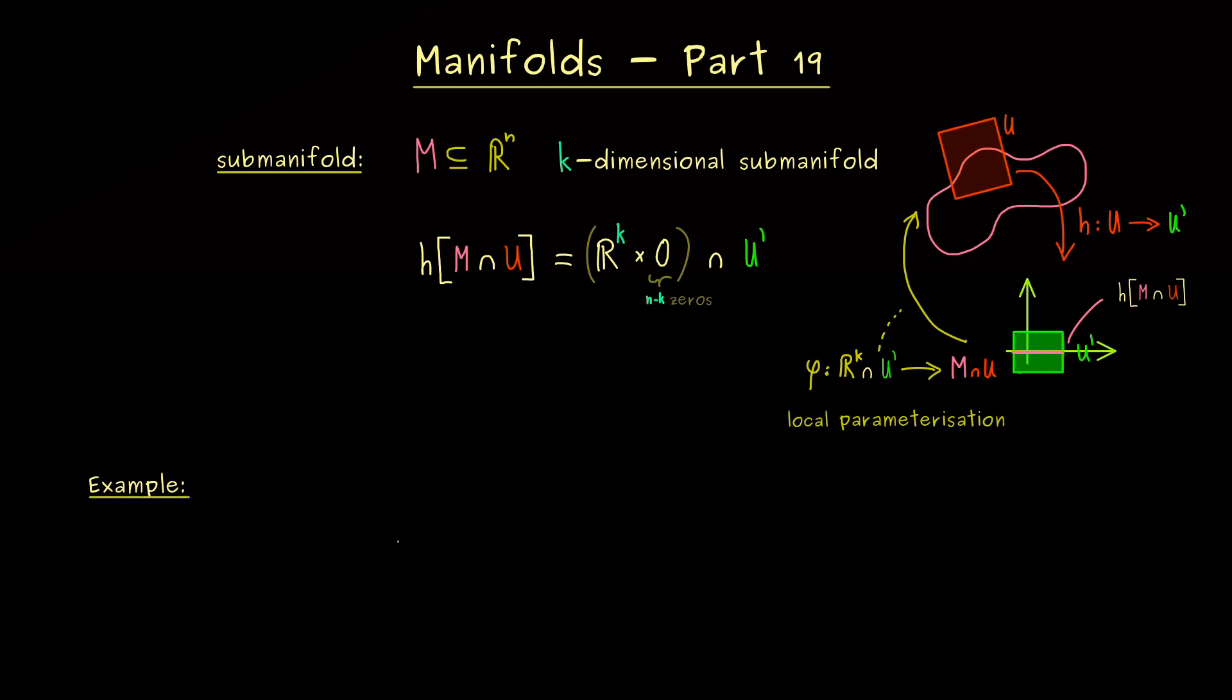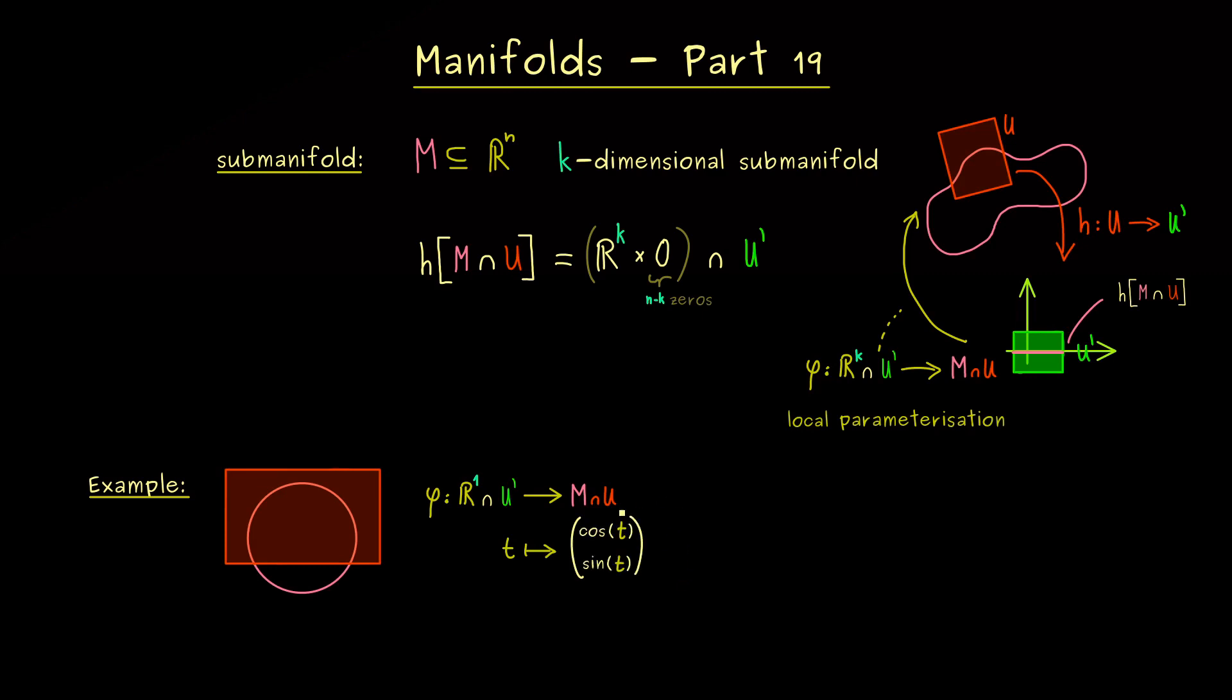And one that comes to mind would be S^1, the circle in R^2. And then I would say, let's write down a simple parameterization. So the map phi has some domain, but it's one-dimensional, so we only need one variable t. And of course, this variable t is sent to a two-dimensional point now. And now you might know, if we use cosine and sine, we will get a nice description of the circle.